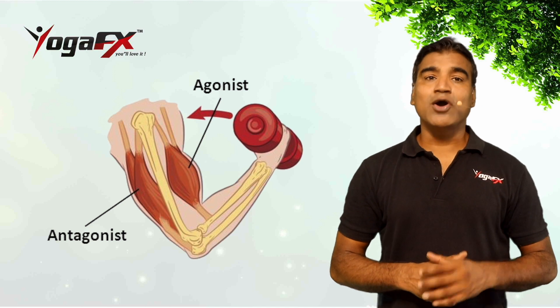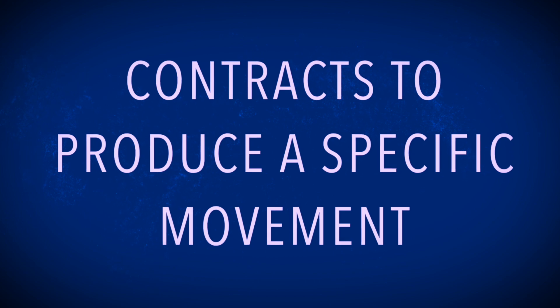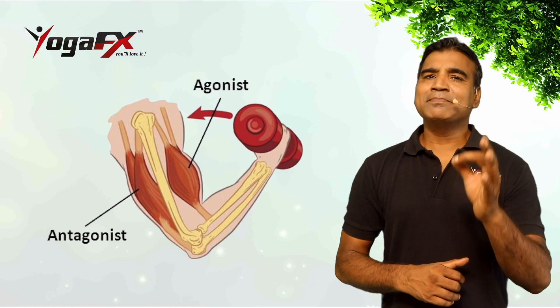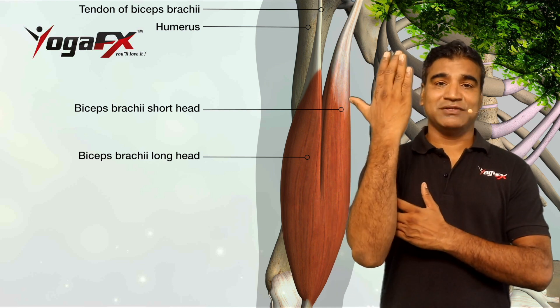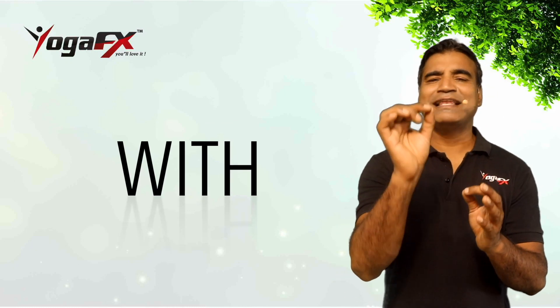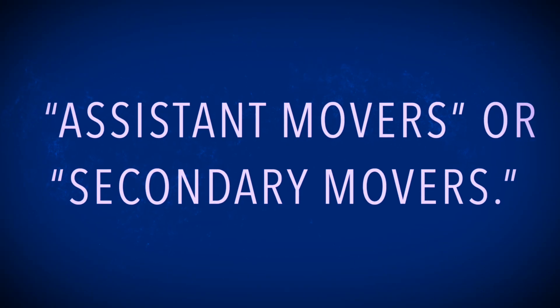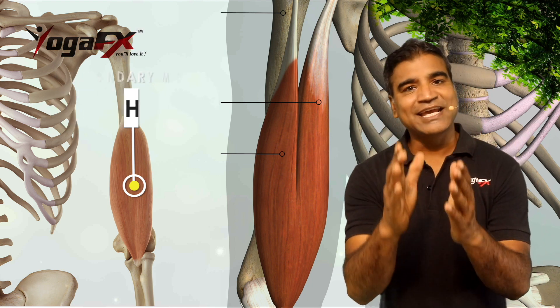Other muscles may assist the prime mover in providing the same movement but with less effect. Such muscles are called assistant movers or secondary movers. For example, the brachialis assists the bicep brachii in flexing the elbow and therefore is a secondary mover.